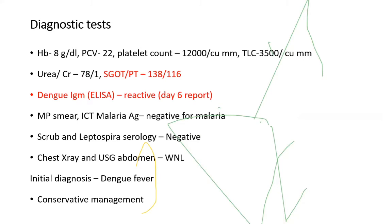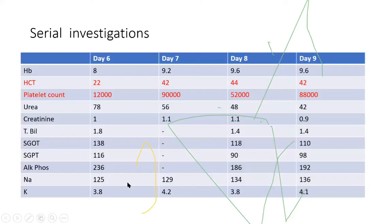On investigation: anemia, platelet count not very low, leukopenia with transaminitis. On the 6th day, dengue IgM ELISA was performed and came out reactive. Other tests — malarial test, scrub typhus, and leptospira serology — were negative. Chest X-ray and abdomen were normal. Initial diagnosis was dengue fever and conservative management was initiated.